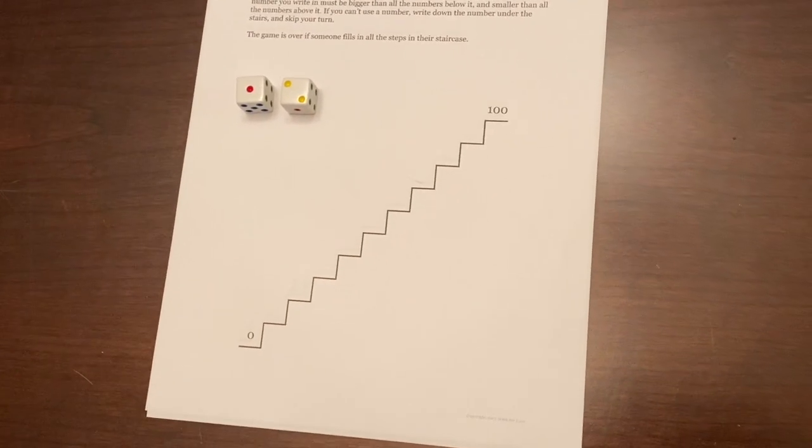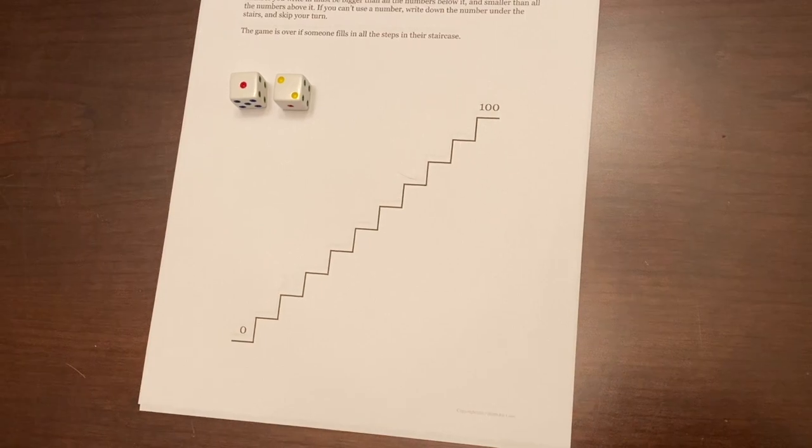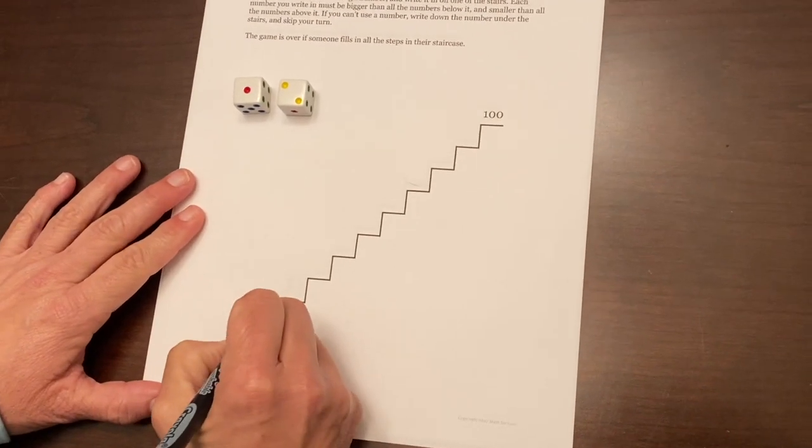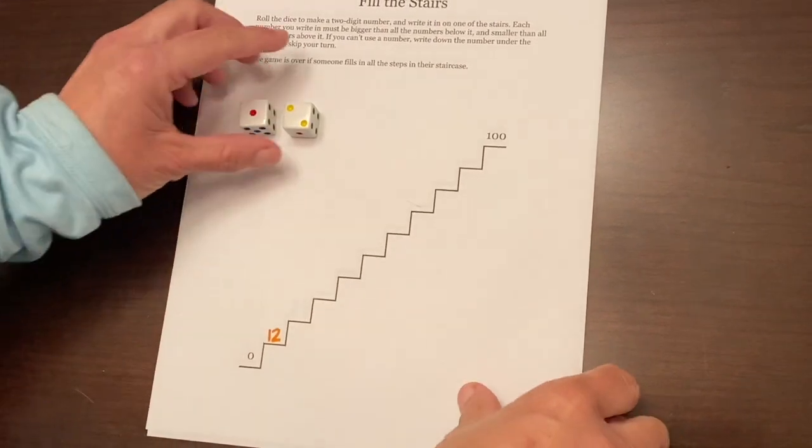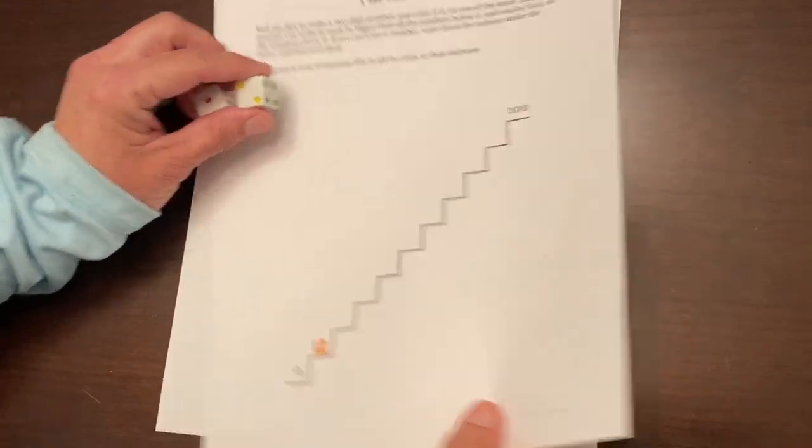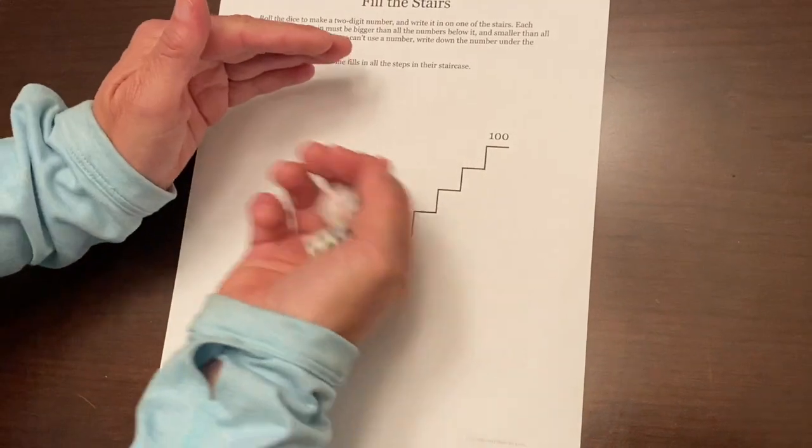Or tell me why you put 12 right here, because we want students to justify their reasoning, which is an important mathematical practice. I believe that cameraman would want to put it right there. All right, again I would ask him, why is that the best move that you put there for you?